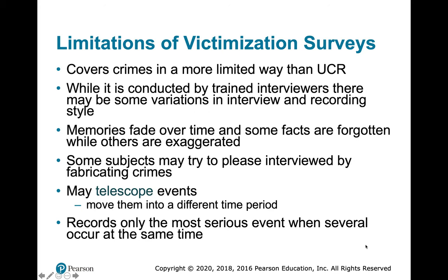The NCVS covers crime in a more limited way than the UCR, and while it's conducted by trained interviewers, there may be variations in interviewing style. One issue is telescoping — survey respondents may misplace events in time, thinking something that happened in May occurred in June, or vice versa, because memories fade. People may also underreport embarrassing events or report events that didn't happen. The NCVS also records only the most serious event when several occur at the same time.